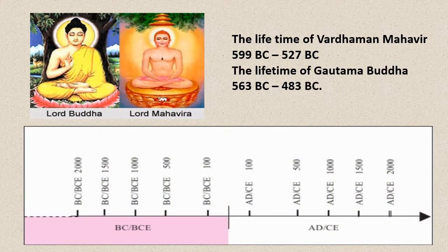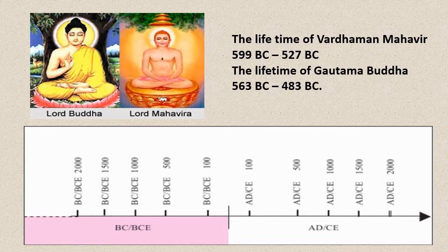Here are some examples of indicating time before the Common Era. Vardaman Mahavir was born in 599 BC, so his lifetime is written as 599 BC to 527 BC. Similarly, Gautam Buddha was born in 563 BC, so his lifetime is written as 563 BC to 483 BC. In this reverse order, we mention events which happened before Christ.